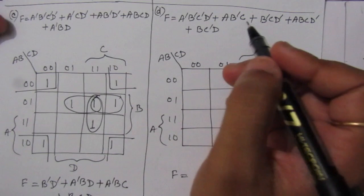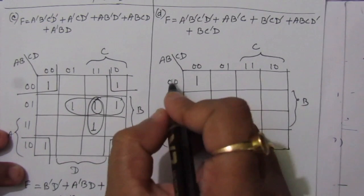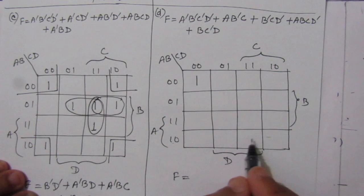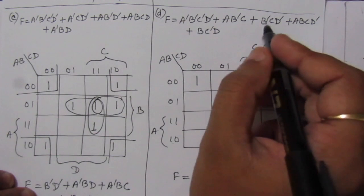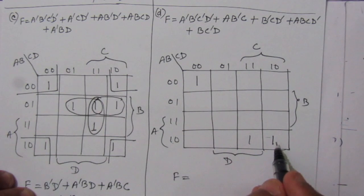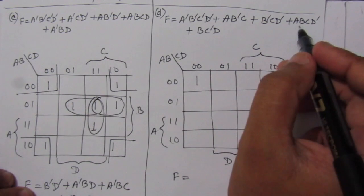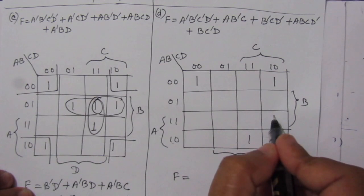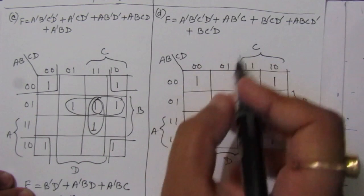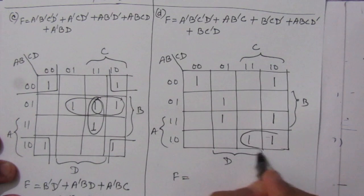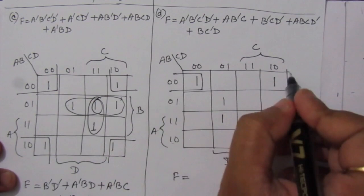In part D, we have A-bar B-bar C-bar D-bar — place a one there. For A B-bar C: A B-bar is the fourth row, and C is one for the last two columns, so ones go there. For B-bar C D-bar: C D-bar is the fourth column; B-bar is the first and fourth rows, so we add a one. For A B C D-bar: A B is the third-fourth rows, C D-bar is the fourth column, so place a one. For B C-bar D: C-bar D is the second column; B is one for the second and third rows, so place ones there. Now combining: first term, second term, third term, and fourth term are identified from the groups.